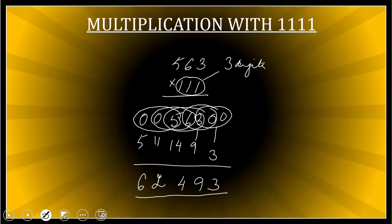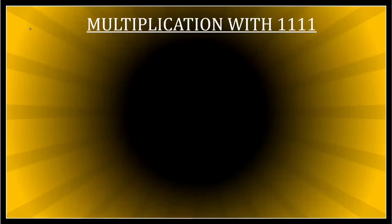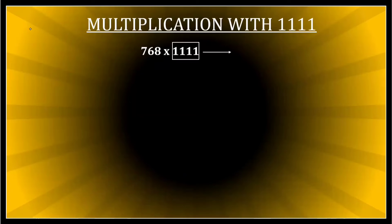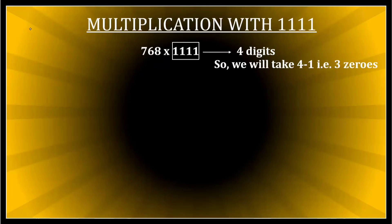I hope this method is now clear. Now let us multiply with 1111. Can you guess what we are going to do? I take a number — let's say 768 — multiplied by 1111. How many digits in 1111? There are four ones — four digits. Four digits means four minus one equals three zeros. I'll put three zeros on the left side and three zeros on the right side of 768.